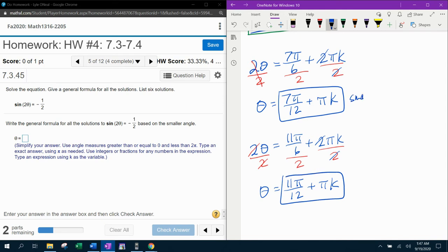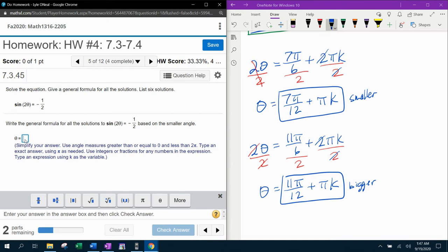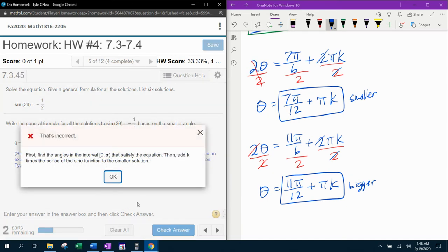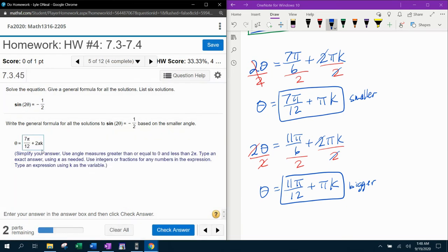This would be the smaller angle to start with. And then this one is the bigger angle. So let's see how we did. The general solution, first general solution is going to be 7 pi over 12 plus 2 pi k. Whoops. Oh my gosh.